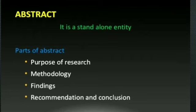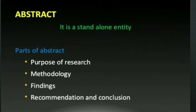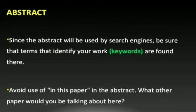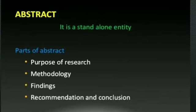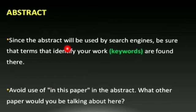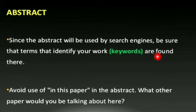Let's talk about what is an abstract. In one line, it is a stand-alone entity — if you are reading any abstract, it means it is the full and whole essence of the particular work. The parts of an abstract are: purpose of research, methodology, findings, recommendations, and conclusions. Since the abstract will be used by search engines, be sure that terms that identify your work — keywords — are included so that everyone who is searching can find your article. Avoid using 'in this paper' in the abstract.